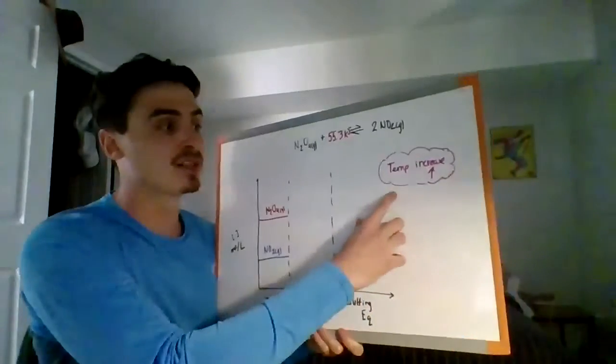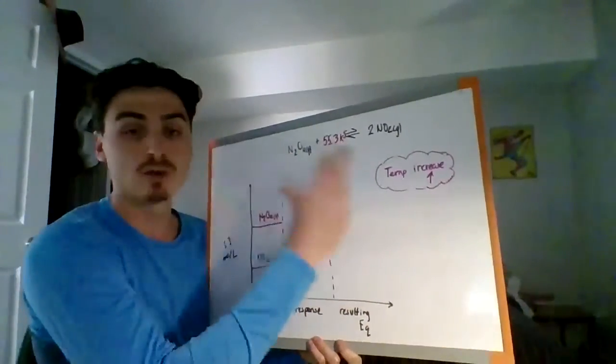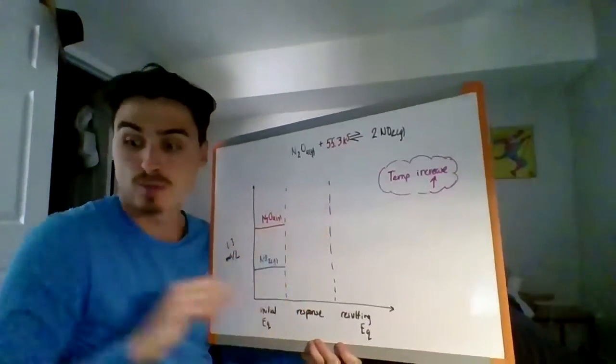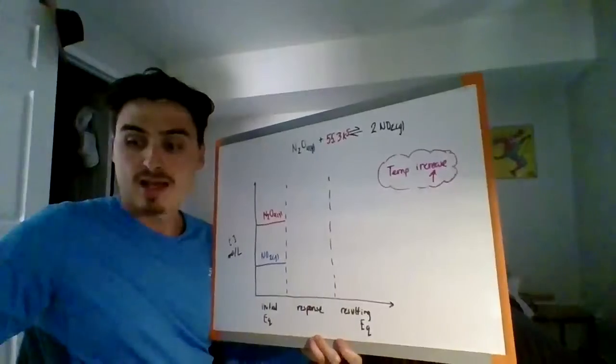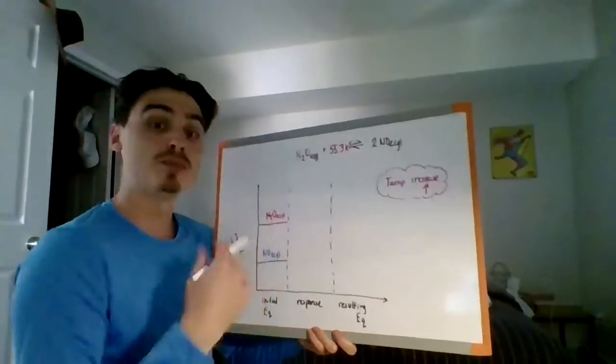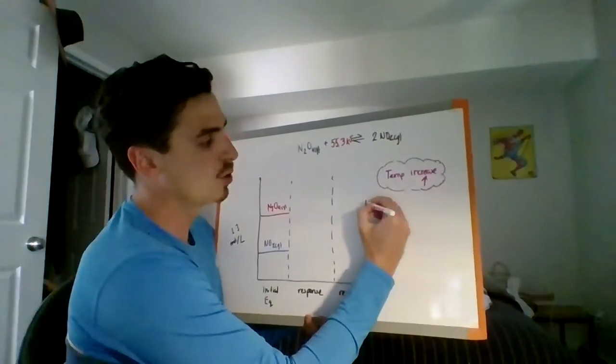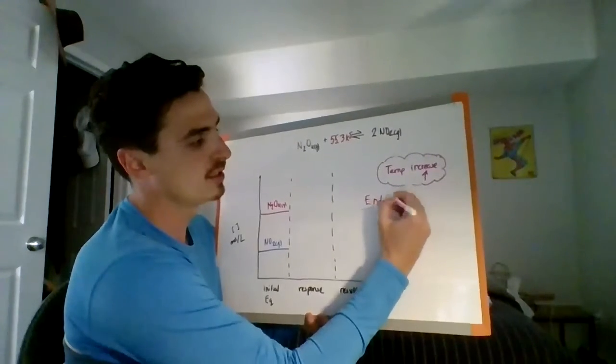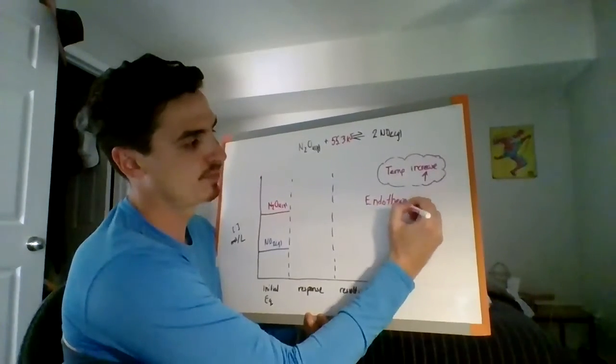In order to know what's going to happen to the temperature, we need to know if the reaction is exo or endothermic. Okay, so if I look at this equation, I have energy on the left side, which means energy is being absorbed, which means the reaction is endothermic.